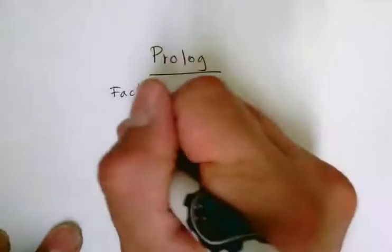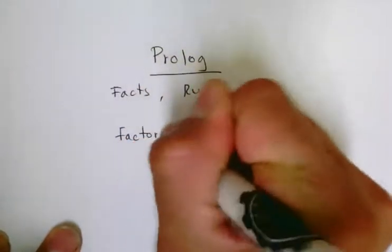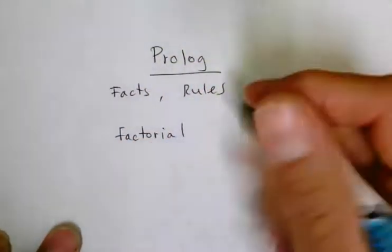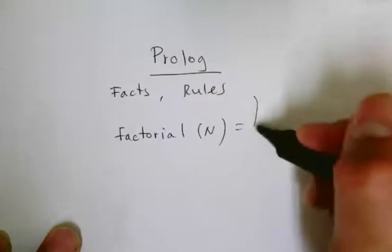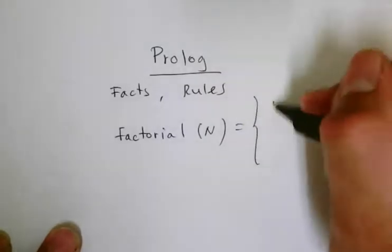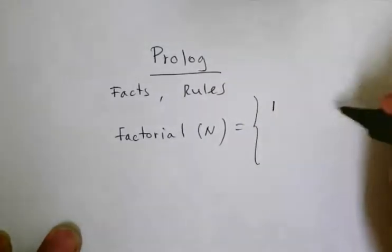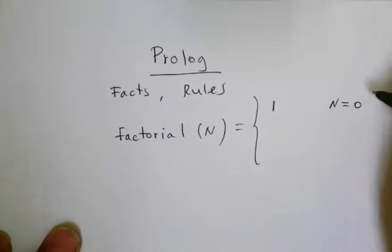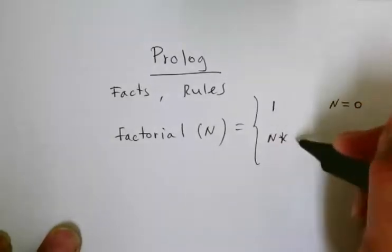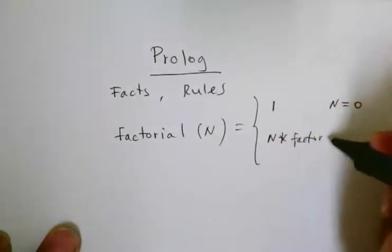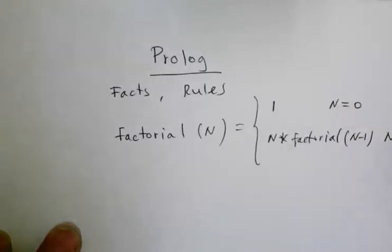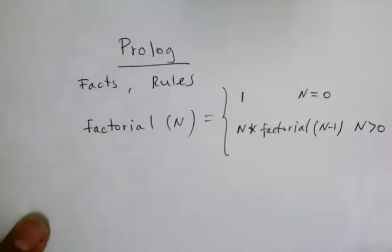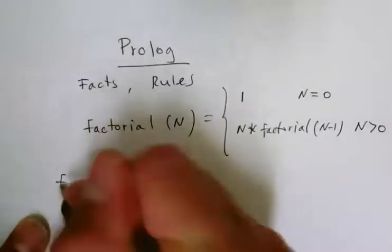For example, let's suppose that we want to make a definition of a factorial. Factorial of a number is a mathematical function that can be defined as 1 when n equals 0 or n times factorial of n minus 1 for n greater or equal than 0. Let's use just f for factorial.